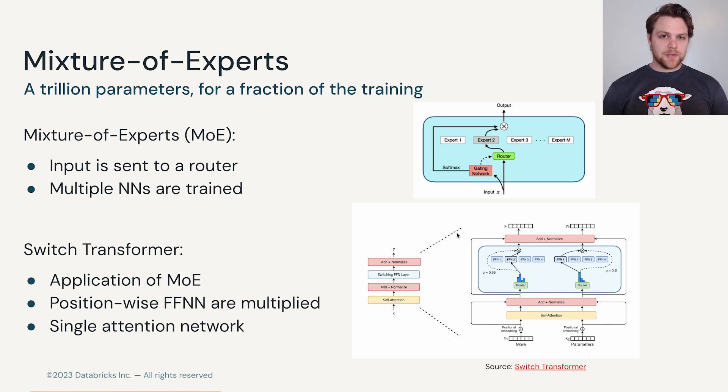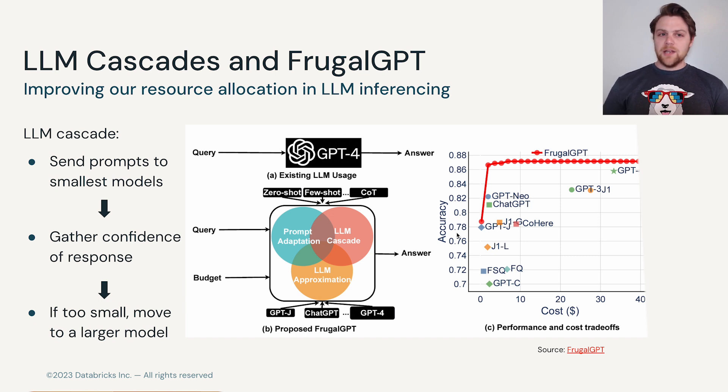But let's say we're not worried about training per se—we're more worried about inference. Let's say you have a fixed cost budget and you're only able to interact with large language models through some API. In this case you might look at something like an LLM cascade.